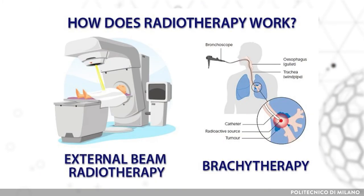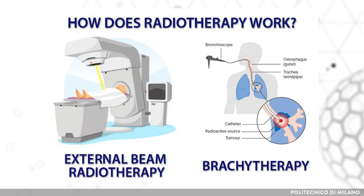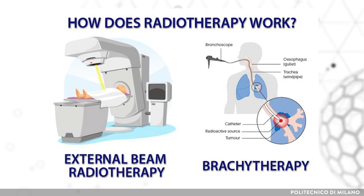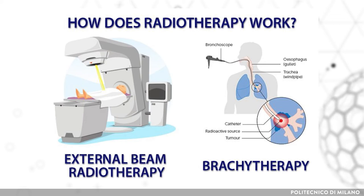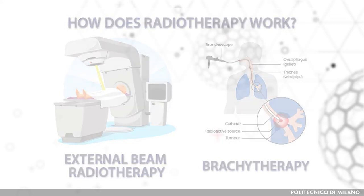In brachytherapy, the radioisotope contained in a metal wire sheath or in small beads is placed near the tumor site for site-specific damage. There are certain radioisotopes which are commonly used for making therapeutic radiopharmaceuticals, as well as those which are applied for brachytherapy.